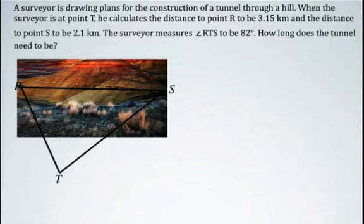So a surveyor is drawing plans for the construction of a tunnel through a hill. When the surveyor is at point T, he calculates the distance to point R to be 3.15 kilometers and the distance to point S to be 2.1 kilometers. The surveyor measures angle RTS to be 82 degrees. How long does the tunnel need to be?